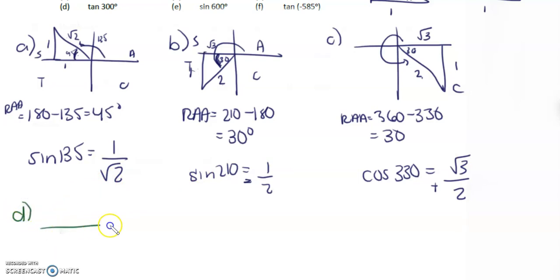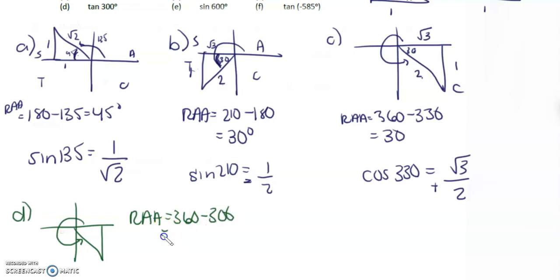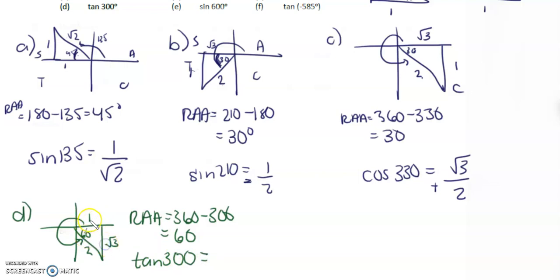D — tan of 300. So 300 lies in the fourth quadrant. Our related acute angle is 360 minus 300, so the related acute is 60 degrees. Opposite 60 is root 3, adjacent 60 is 1, and the hypotenuse is 2. So tan of 300 is opposite over adjacent, which is root 3 over 1, so just root 3. But this is in the C quadrant, so tan is negative.